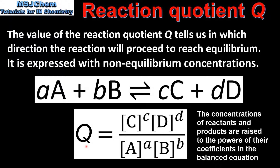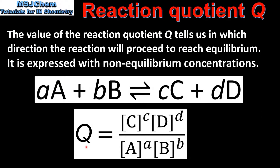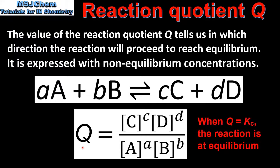The difference between the two is that the reaction quotient Q is expressed with non-equilibrium concentrations of reactants and products. Once the value of the reaction quotient Q is equal to the equilibrium constant Kc, the reaction is at equilibrium. So next we look at some examples.